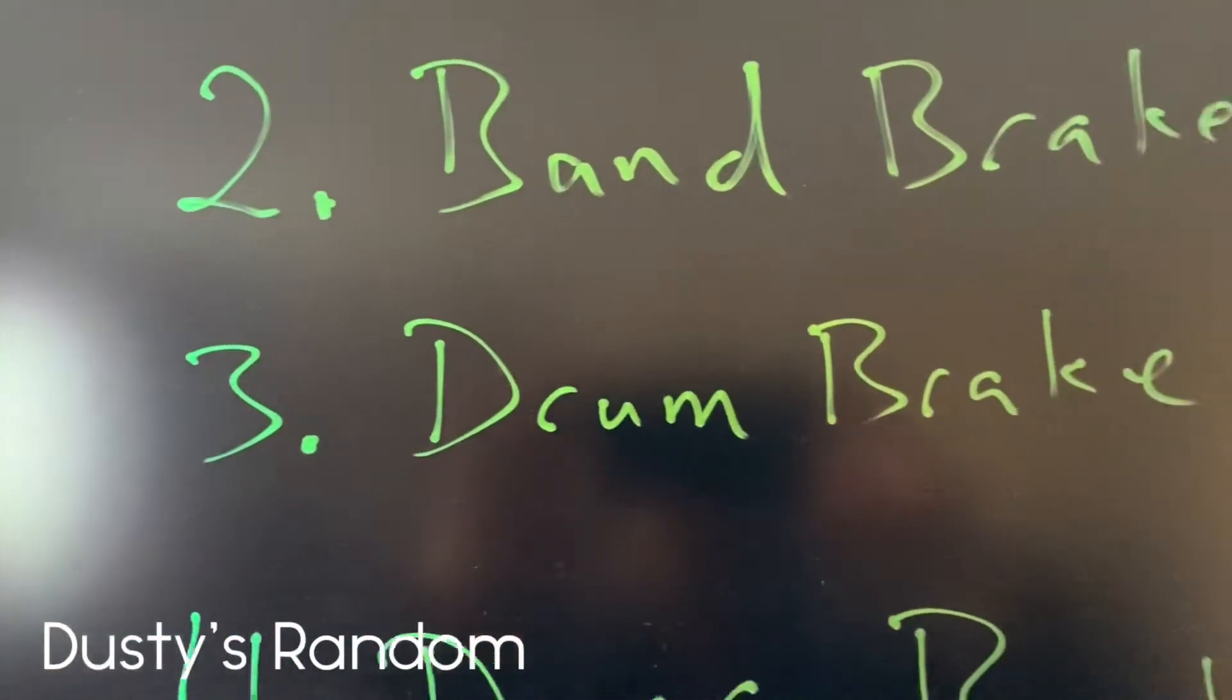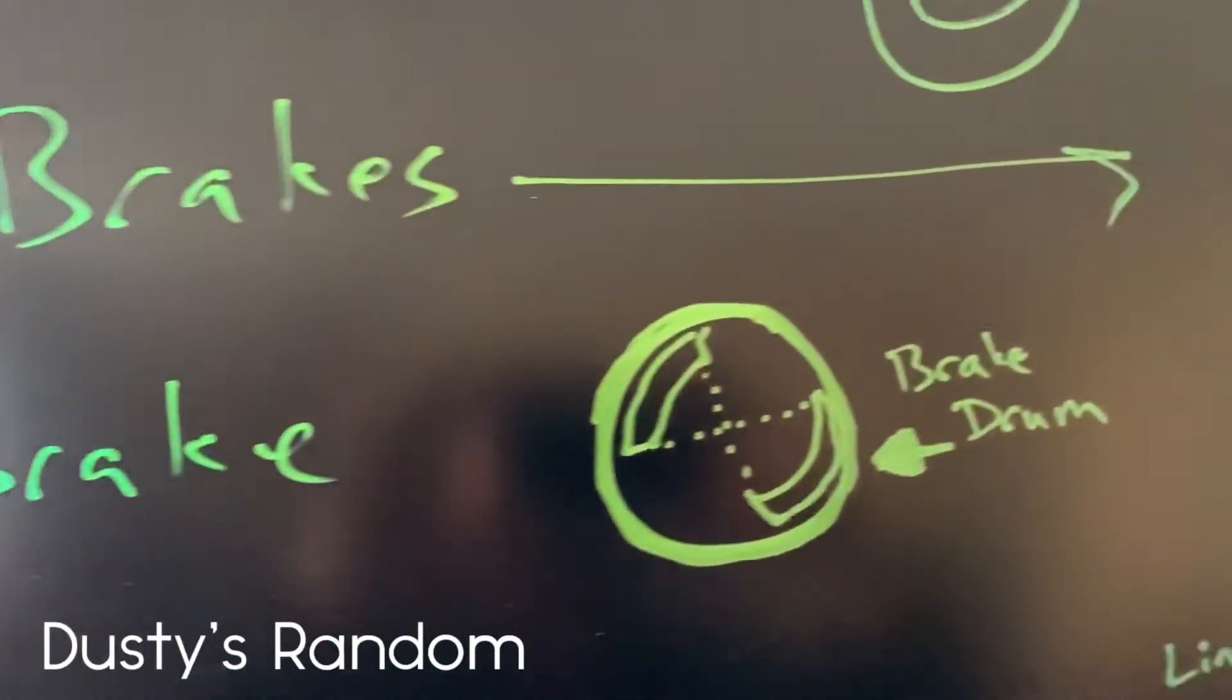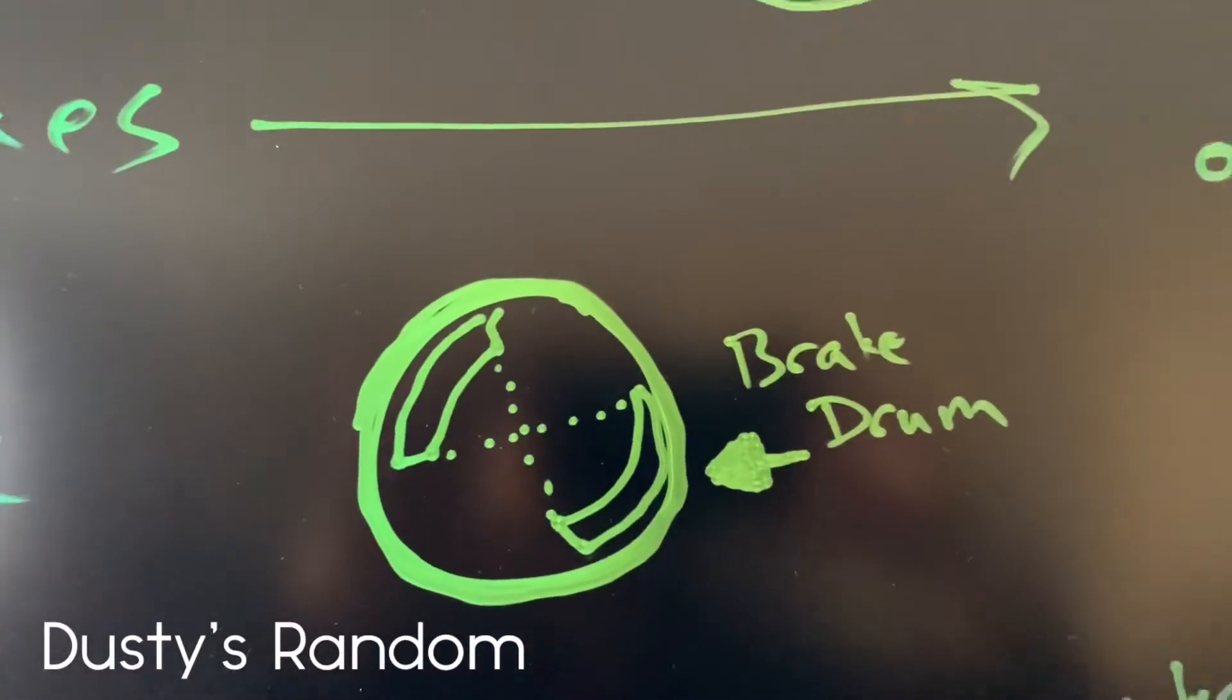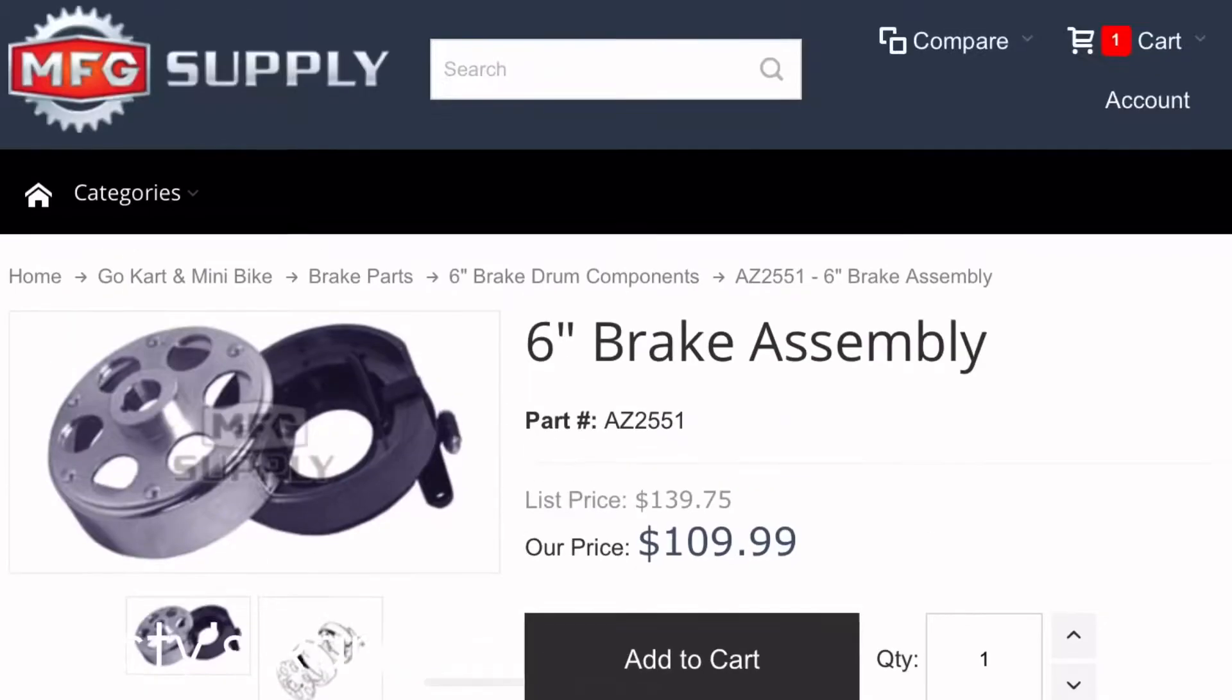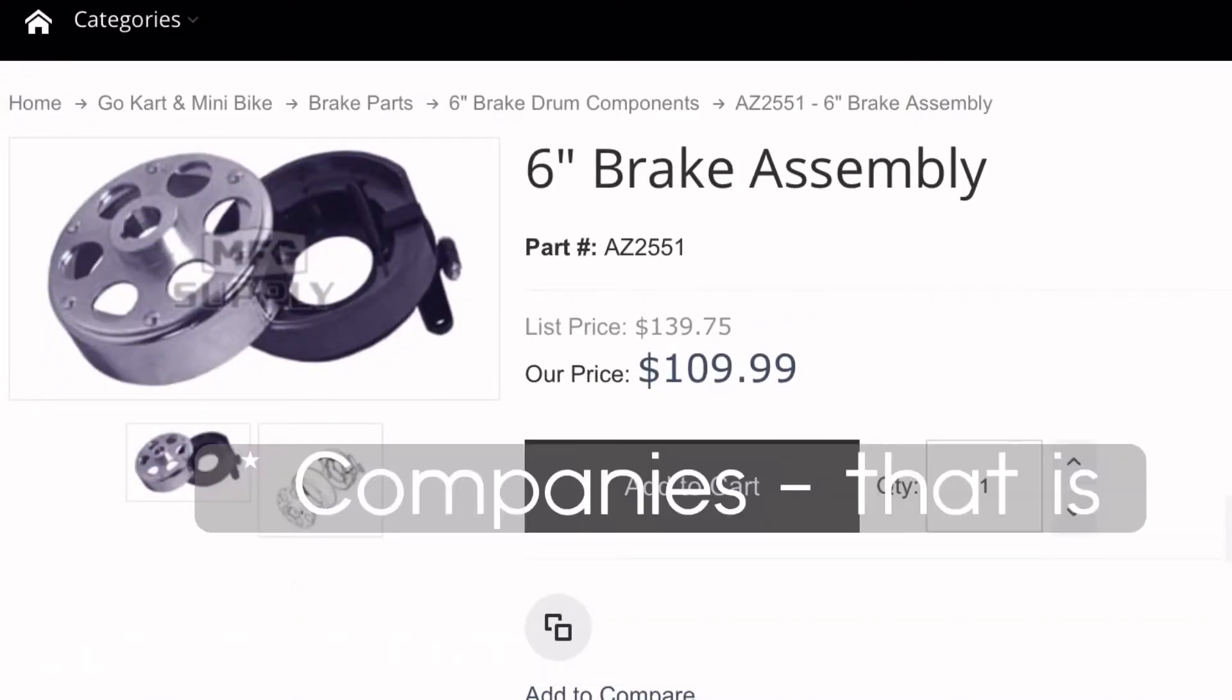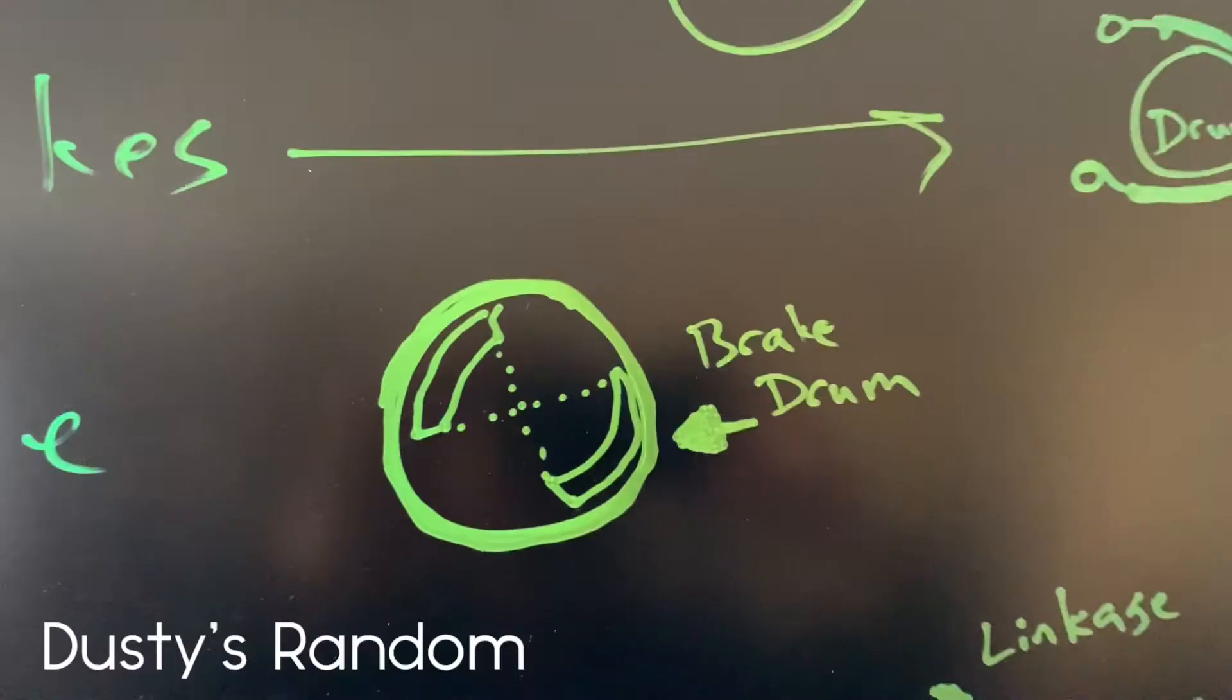Next up, drum brakes. Drum brakes use a drum on the outside and pads or shoes on the inside. They can be mechanical or hydraulic. Here is a set of mechanical drum brakes. I do not endorse any of these. Just an example.